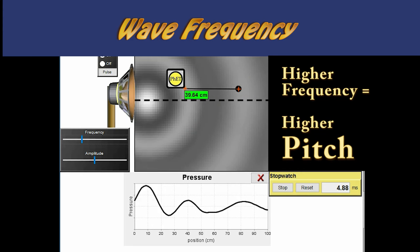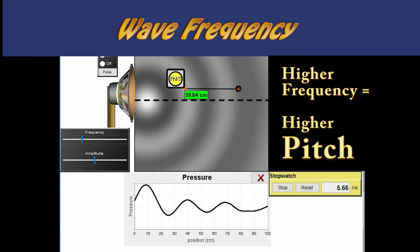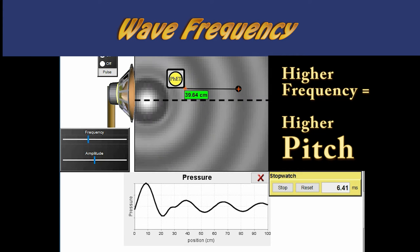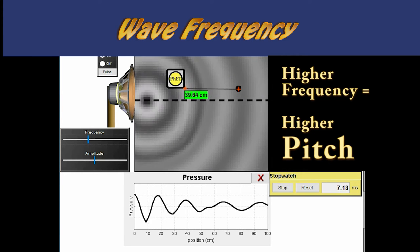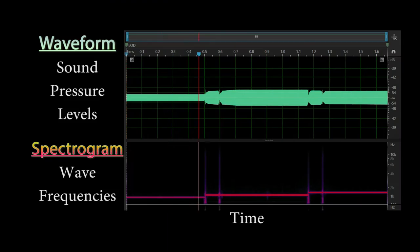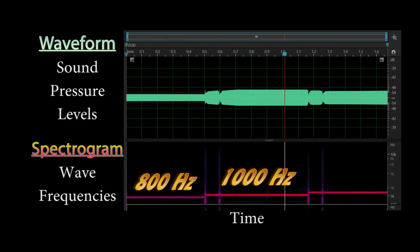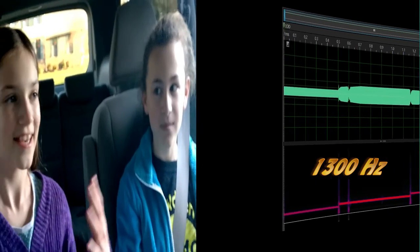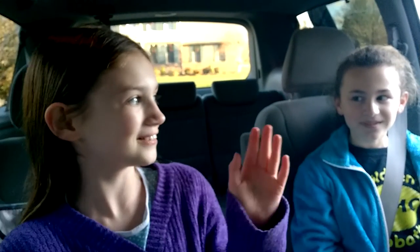Our brains interpret higher frequency sounds as a higher pitch. Your vocal cords vibrate that way and it allows you to make sound.